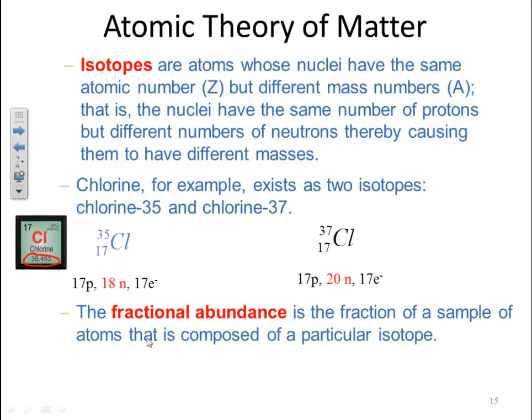The fractional abundance is the fraction of the sample of atoms that is composed of a particular isotope. For this particular example, the fractional abundance of chlorine-35, which has a mass of 34.97 AMUs, is 75.771%. Chlorine-37, mass of 36.97 AMUs, has a fractional abundance of 24.229%. So, three-fourths of the isotopes have a mass equivalent to that of chlorine-35.